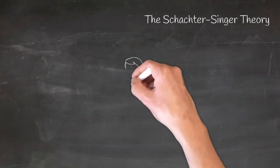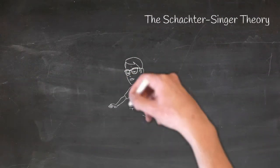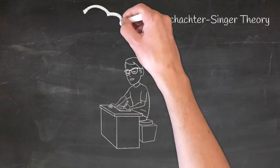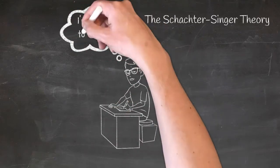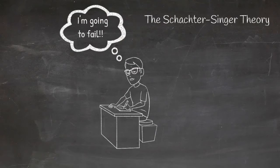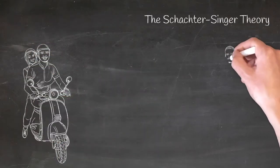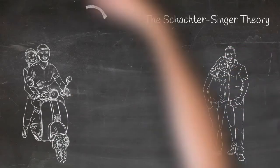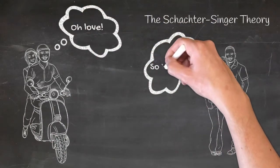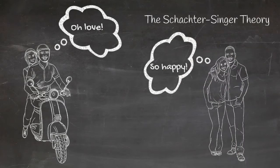For example, if you feel that your heart is racing and your palms are sweating during a hard exam, you will probably label this emotion as anxiety, but if you have the same physical response when you are on a date, you could interpret the same responses as love, affection, or arousal.